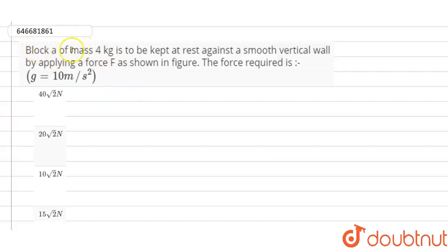So guys, in this question it is given that a block of mass 4 kg is to be kept at rest against a smooth vertical wall by applying a force F as shown in this figure.